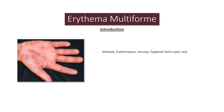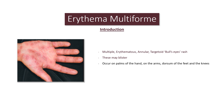Erythema multiforme is a skin rash characterized by multiple, erythematous, annular, target-shaped bullseye rash, and the rash may blister. These occur on palms of the hand, on the arms, dorsum of the feet, and the knees. The disease is likely to have an immunological basis.